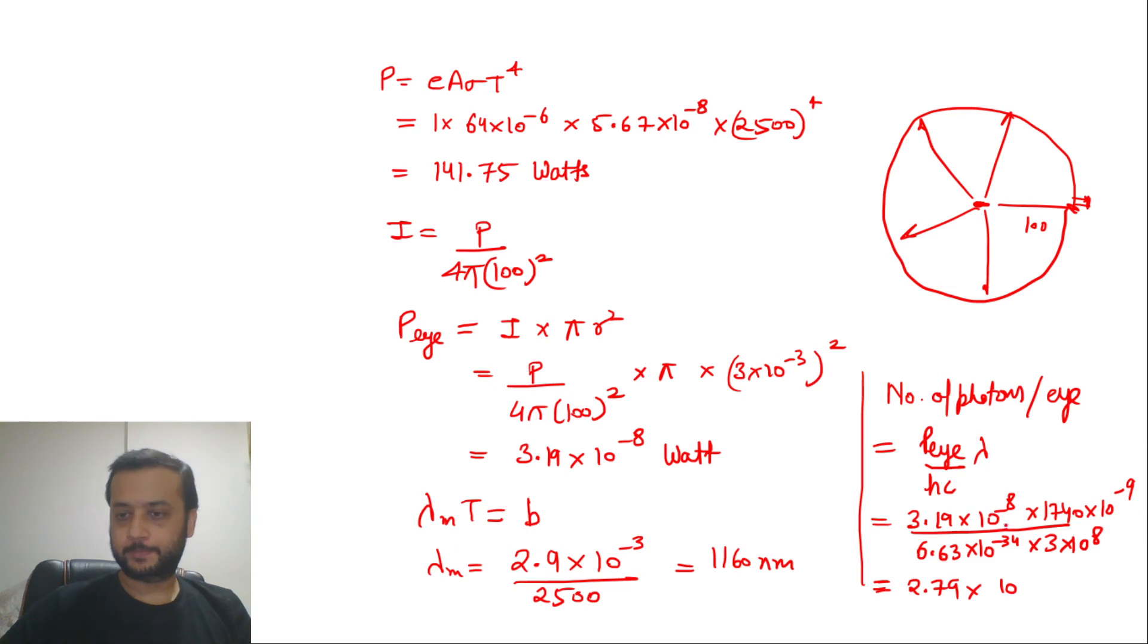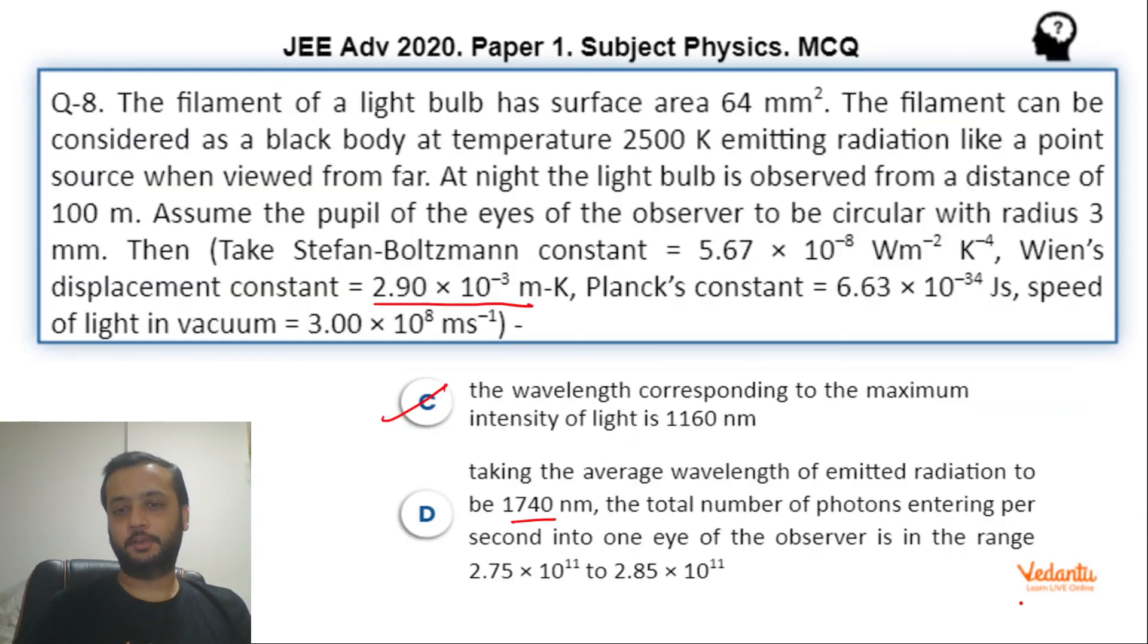So this many number of photons per eye are entering. This of course is in the range, and hence option D is also right.